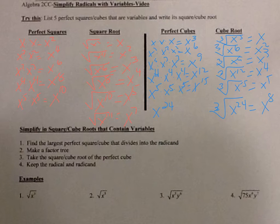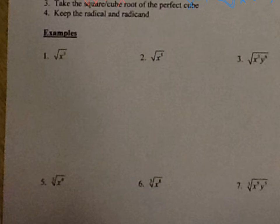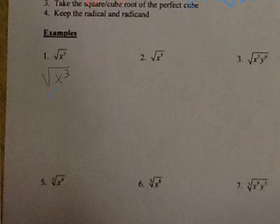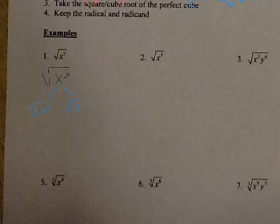Now we need to put this under the radical and start simplifying. Let's simplify — it's the same thing as before, just with letters. The square root of x to the third: I'm looking for the largest perfect square that goes into x to the third. You need an even exponent, so that's the square root of x squared times x. The square root of x squared is x, and then you just bring down the square root of x. So the answer is x times the square root of x.